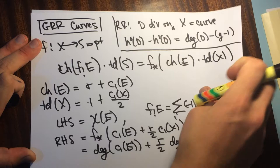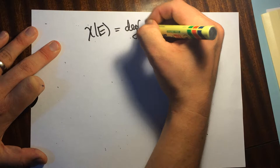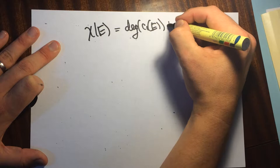Putting these two things together gives us our formula: the Euler characteristic of a vector bundle on a curve is equal to the degree of the first Chern class of the vector bundle plus R over 2 times the degree of the first Chern class of X.